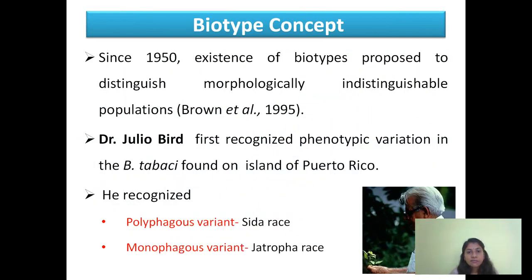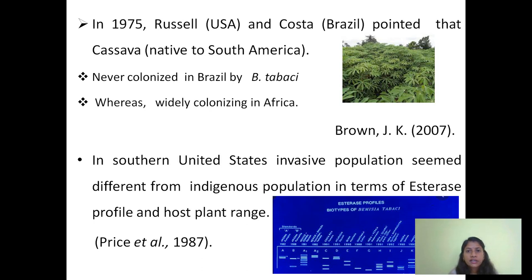The biotype concept was proposed as early as 1950. Dr. Julia Bird was the first person who recognized phenotypic variation in Bemisia tabaci found on the island of Puerto Rico. He recognized two variants: the Sida race as a polyphagous variant feeding on many plant species, and the Jatropha race as monophagous. Following his work, Russell and Costa in 1975 pointed out that cassava, native to South America, was found widely colonized by Bemisia tabaci in Africa, suggesting there were different races present.